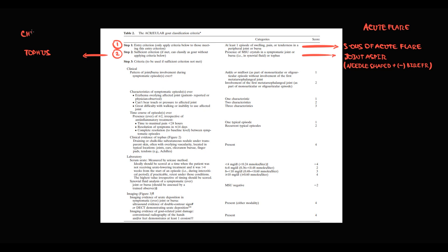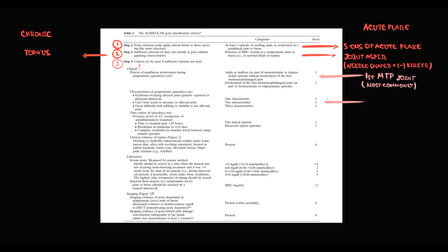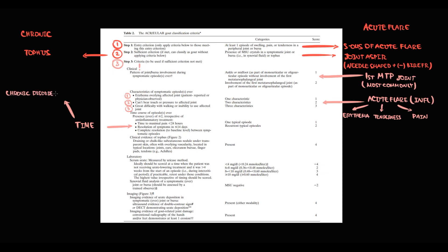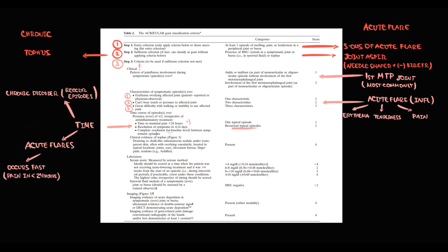Both criteria can be used for acute flare. If gout is long-lasting, it causes formation of tophi, and the presence of a tophus is also a hallmark of gout. Clinical criteria tell us that acute flare most commonly develops in weight-bearing first metatarsophalangeal joints and typically causes erythema, tenderness, and pain. Gout is a chronic disorder with recurrent episodes of acute flare that typically occur fast — for example, consuming beer and developing excruciating foot pain in less than 24 hours.